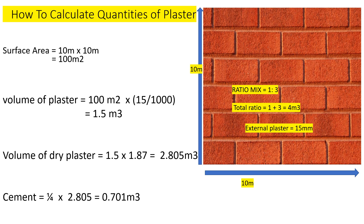First, we calculate the surface area to be plastered. The surface area equals length multiplied by height, giving us 100 square meters. Next, we find the volume of plaster needed using the area and the thickness. Our area is 100 square meters and the thickness is 15 millimeters, which we convert to 0.015 meters. Multiplying gives us 1.5 cubic meters — this is the volume of wet plaster.